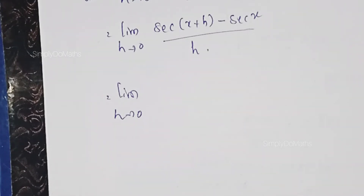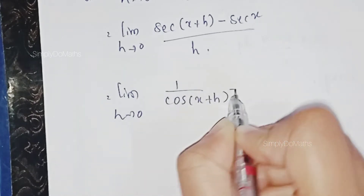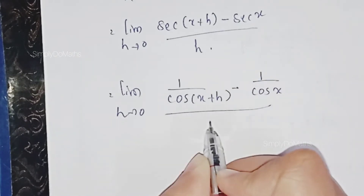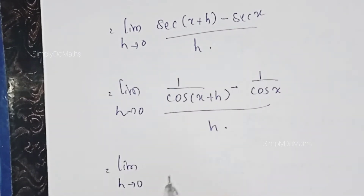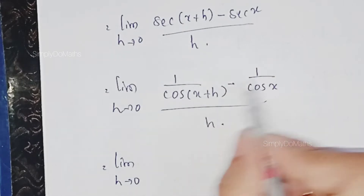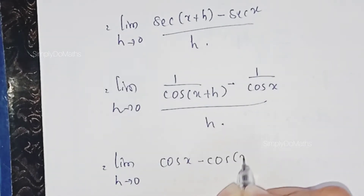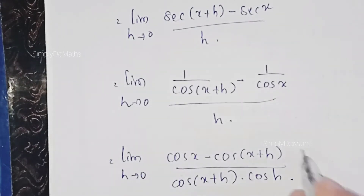This is nothing but limit as h tending to 0, where secant x plus h can be written as 1 by cos of x plus h, minus secant x which is 1 by cos x, all divided by h. Taking the LCM, this becomes cos x minus cos of x plus h, divided by cos of x plus h into cos x, all divided by h.